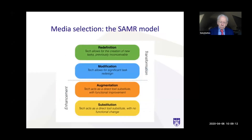I also introduce Ruben Puentadura's SAMR model. SAMR stands for substitution, augmentation, modification, and redefinition. He argues that more powerful uses of technology go towards the top, where you actually change what you're doing — the technology allows for the creation of new tasks previously inconceivable. Virtual reality, for instance, lets students go in and manipulate three-dimensional objects, see the consequences of that manipulation, and form an intuitive understanding — something almost impossible to achieve through a lecture or text on the topic.